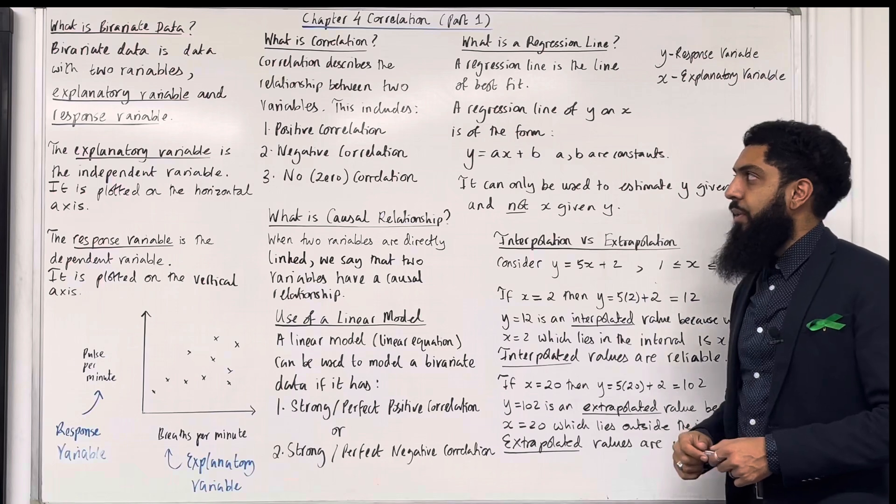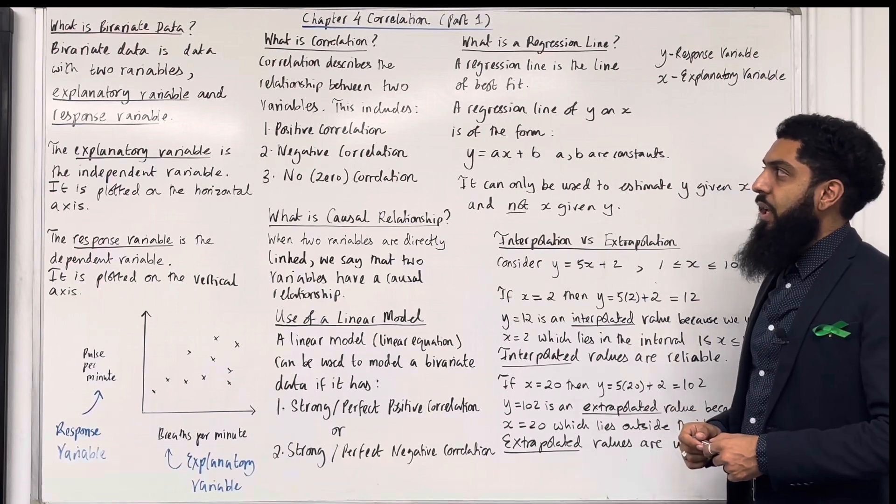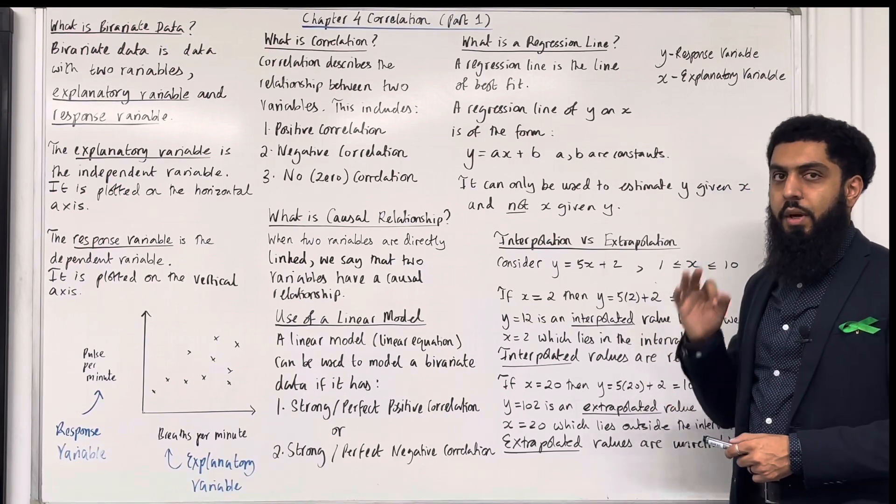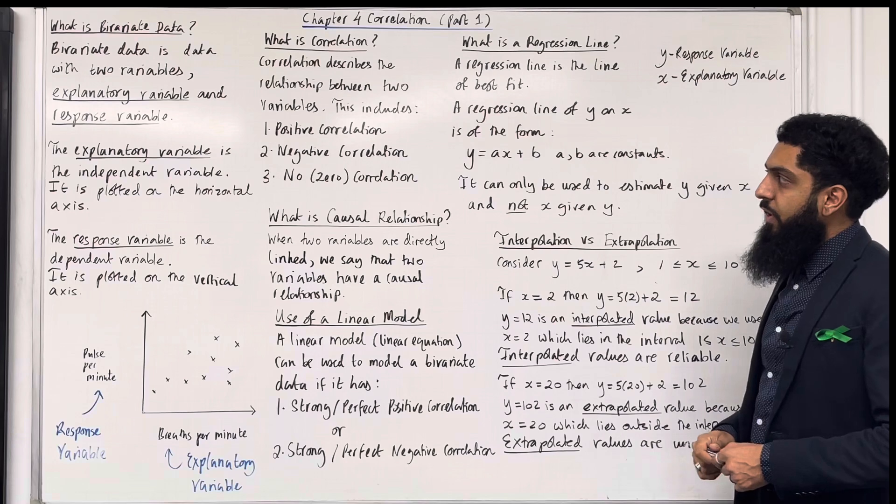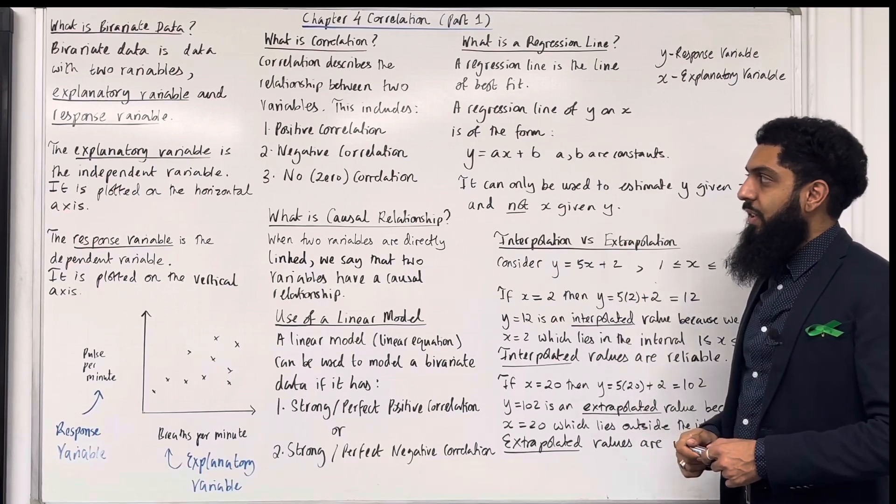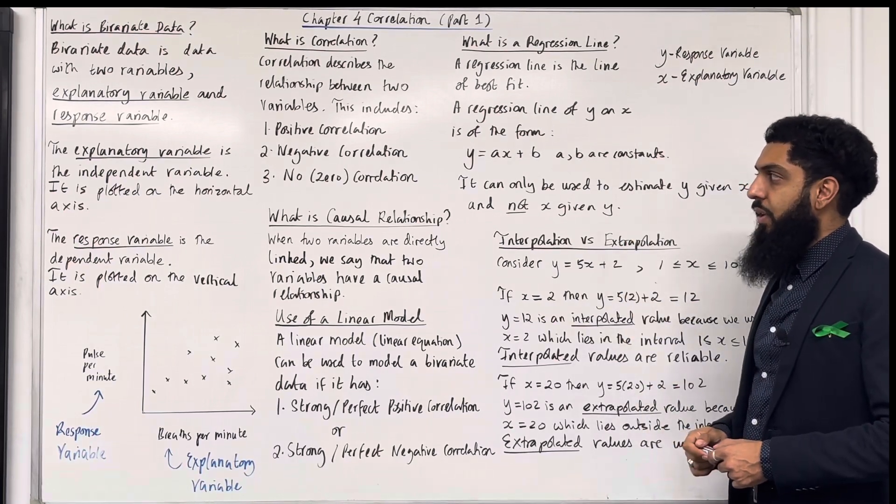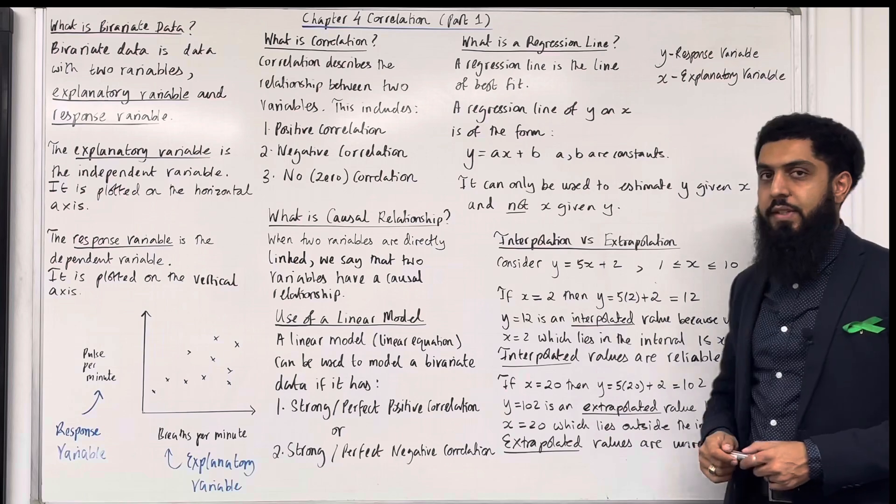What is correlation? Correlation describes the relationship between two variables. There are three different types. The first one is a positive correlation, the second one is a negative correlation, and the third one is a null correlation, or you could say zero correlation.